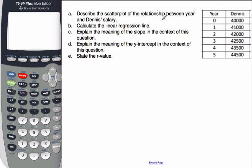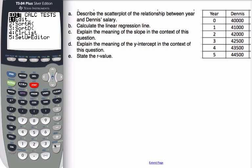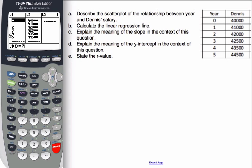We're asked to describe the scatterplot of the relationship between the year and Dennis' salary. One of the first things we're going to do is go to a calculator and graph to see what the scatterplot looks like. This podcast will have lots of calculator material. First thing I'm going to do, I'm going to stat, I'm going to edit, and in my L1 and L2, I'm going to enter the year and Dennis' salary. I've already done that.